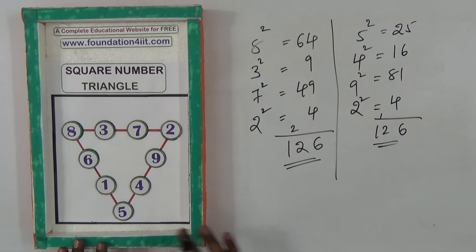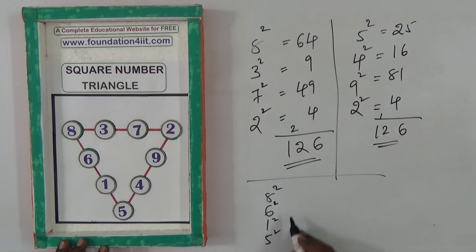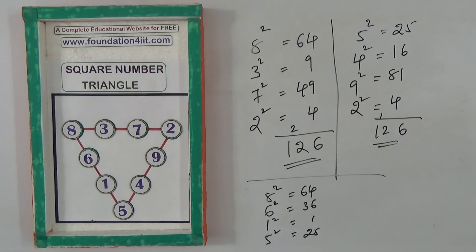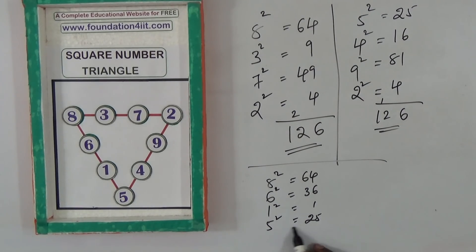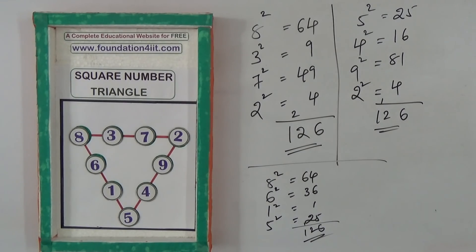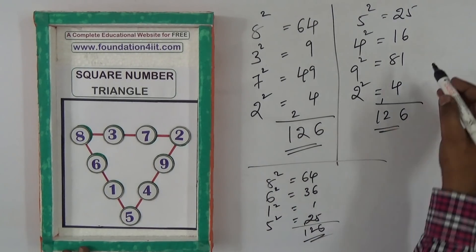Check with one more: 8, 6, 1, 5. 8 square, 6 square, 1 square, 5 square. This is 64, 36, 1, and 25. So 126. There's a specialty of this number game. You can try in different ways also. The sum of this straight line is same, as well as squares of every straight line.